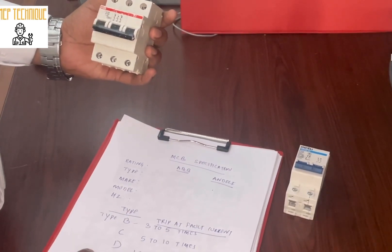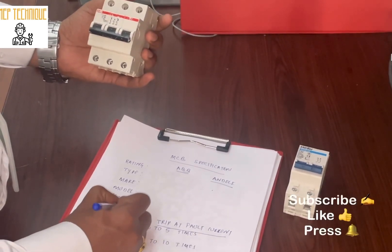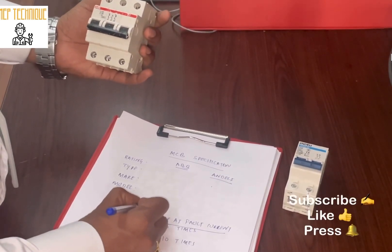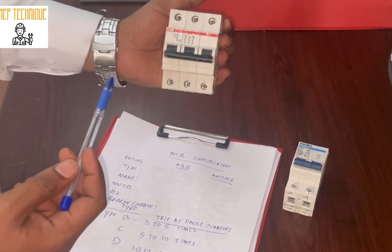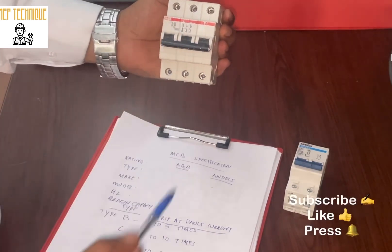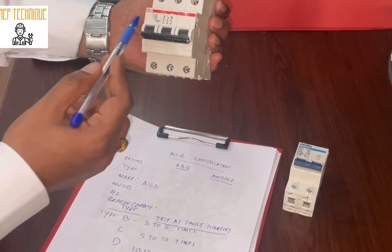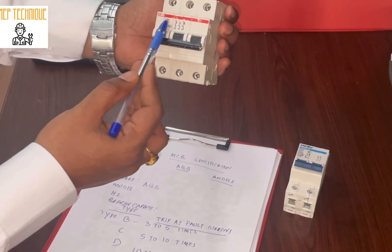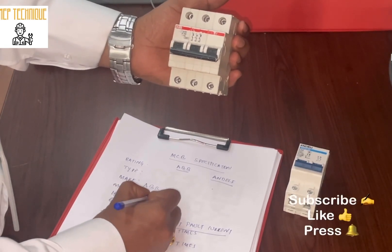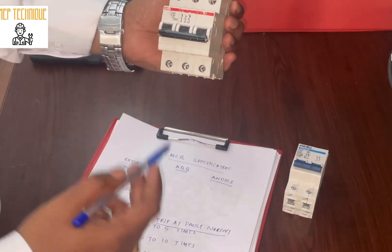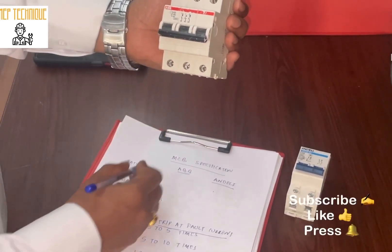I will also check the breaking capacity and energy class. Now I am going to check the rating for this ABB breaker. The make is ABB, and the model number is S203.